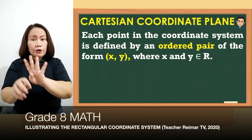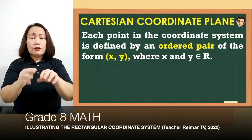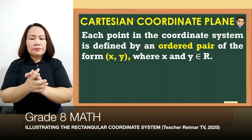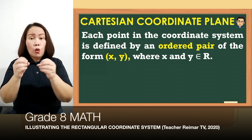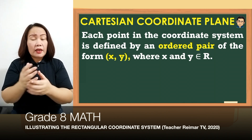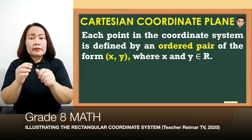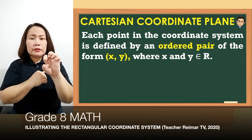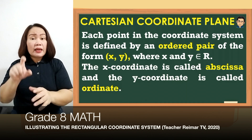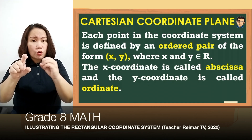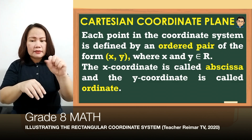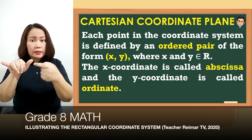Each point in the coordinate system is defined by an ordered pair of the form (x, y), where x and y are elements of real numbers. Bawat point sa Cartesian coordinate plane ay tinatawag na ordered pair, na sinusulat in the form of x and then y. The x-coordinate is called the abscissa and the y-coordinate is called the ordinate.